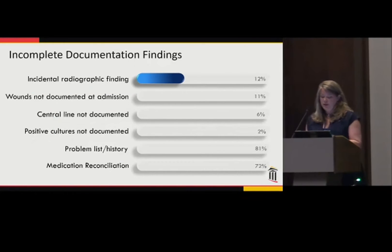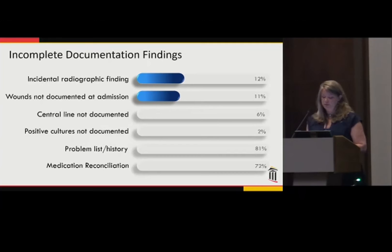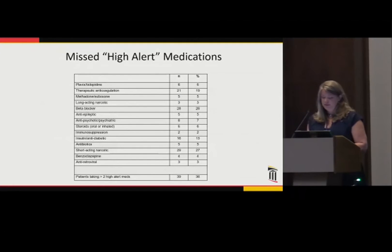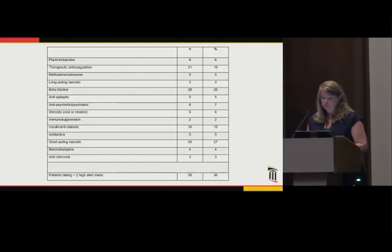More than half of patients were admitted to floor status, followed by 41% admitted to the ICU. The majority — 81% — were admitted non-electively, and urgent or emergent procedural interventions were performed on 44% of patients within 24 hours of admission. There were 13 incidental radiographic findings not noted. Twelve patients had wounds present on admission not documented in the admission physical exam, including stage 2 or greater pressure ulcers. Central venous catheter presence was omitted on six patients. Most notably, 81% did not have an updated problem list or past history, and 72% had an incomplete or incorrect medication reconciliation. Of the 78 patients with an incomplete med rec, 68 had errors in high-alert medications including therapeutic anticoagulation, beta blockers, short-acting narcotics, and anti-diabetic agents.